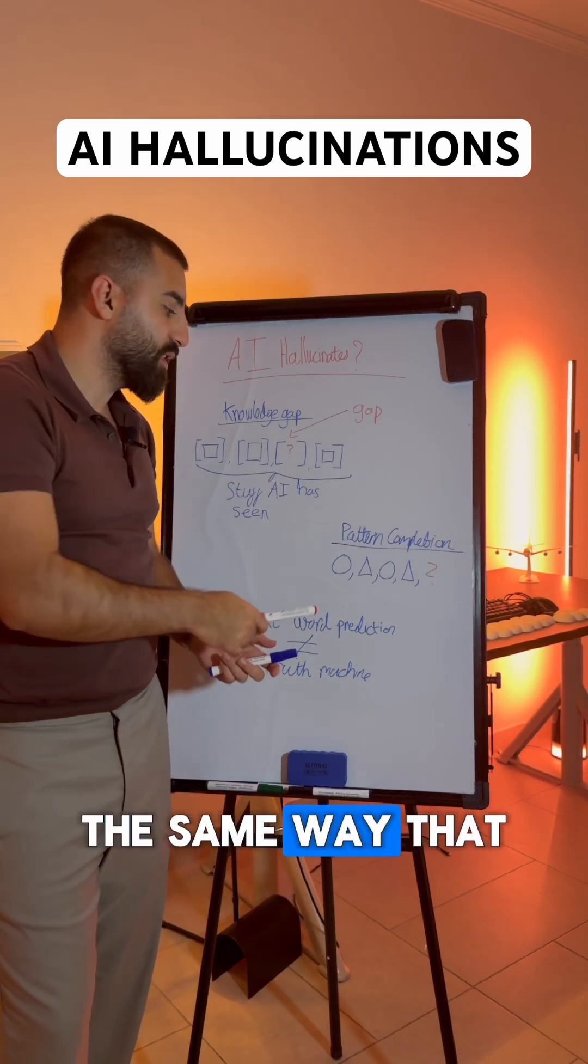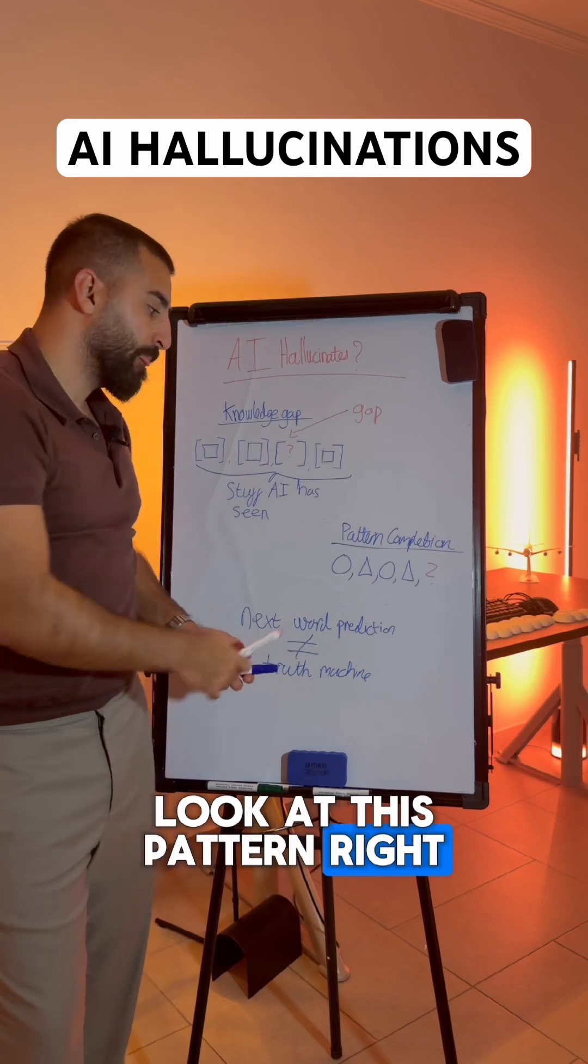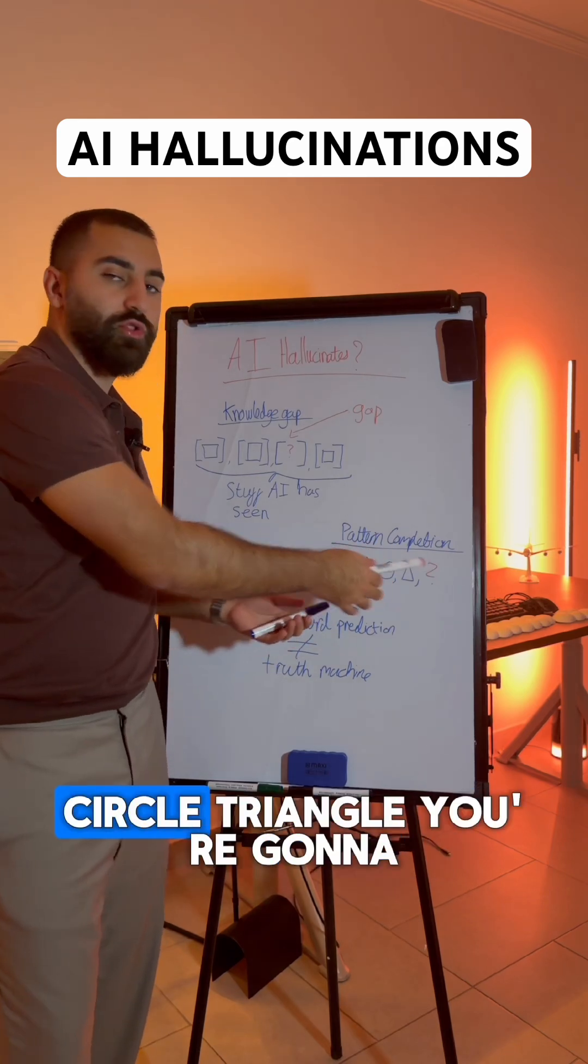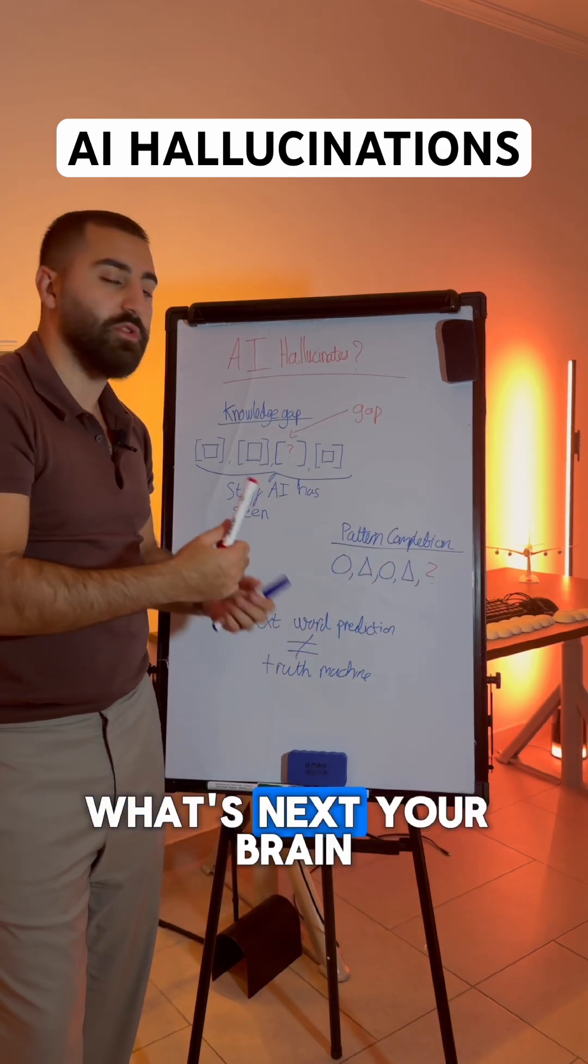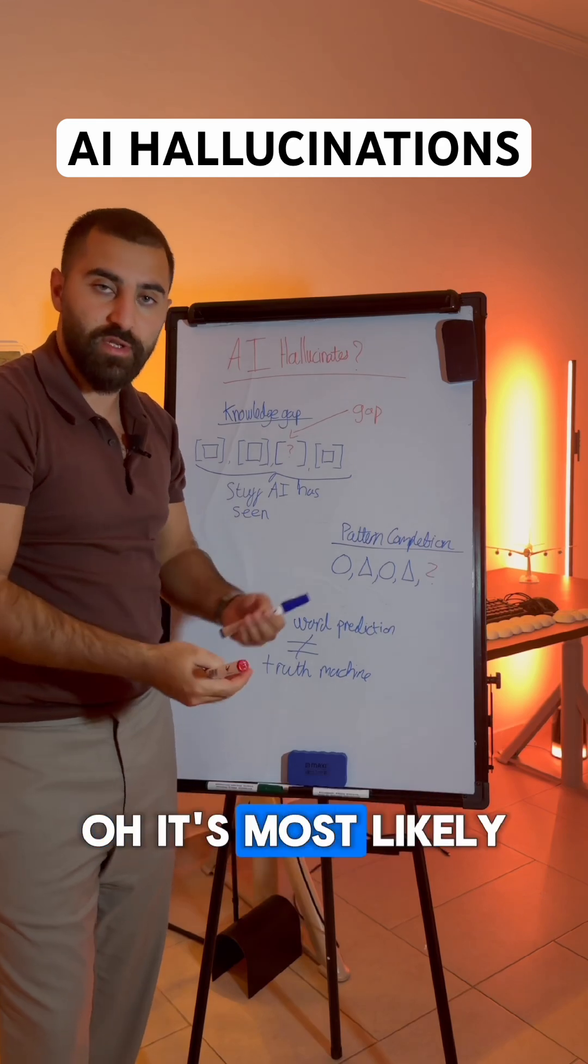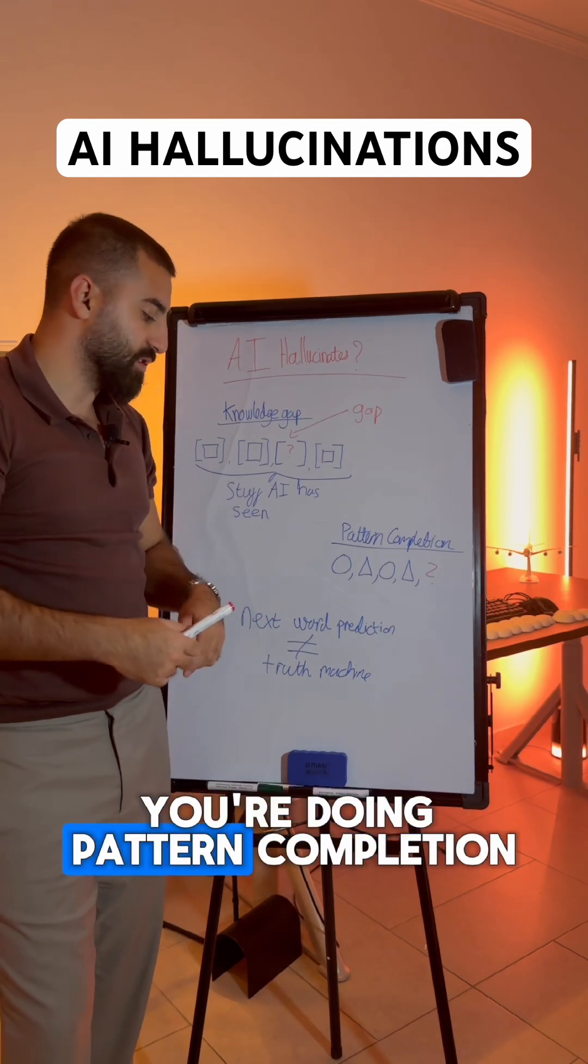It's doing pattern completion, the same way that if you were to look at this pattern and it's a circle, triangle, circle, triangle, you're going to say okay what's next? Your brain is most likely going to say it's most likely a circle. You're doing pattern completion.